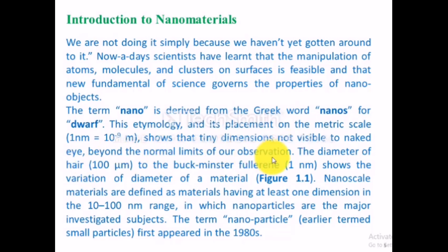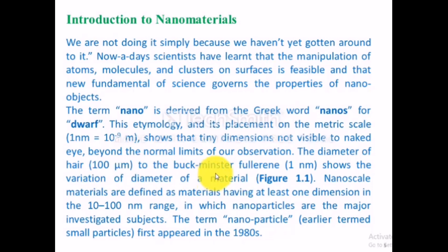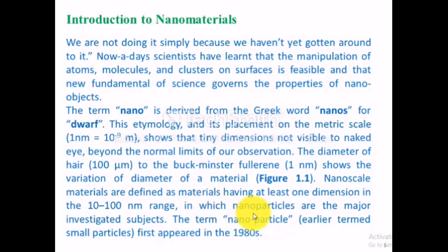It is well known that the diameter of a hair is 100 micrometers. If we compare the diameter of a hair, which is 100 micrometers, to Buckminster fullerene, which is 1 nanometer in size — as shown in Figure 1.1 — nanomaterials are defined as materials having at least one dimension in the 10 to 100 nanometer range, in which nanoparticles are the major investigated subjects. The term 'nanoparticles' first appeared in the 1980s.